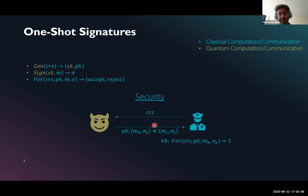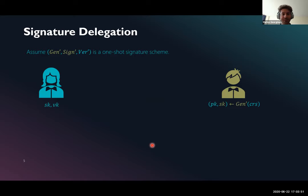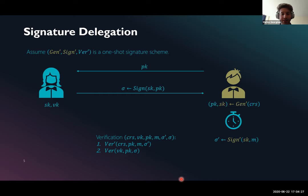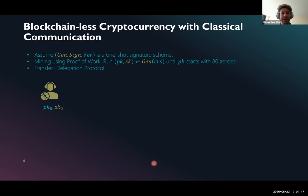The security property says that no algorithm can output a public key of its choice together with M0, sigma0 and M1, sigma1 such that both signatures are valid for the corresponding messages. Notice that the adversary is allowed to pick the public key and the whole communication between the adversary and the challenger is classical. If we have this, here's a way we could delegate the power to sign a single message to Bob: we ask Bob to send us a public key by running the one-shot signature generation algorithm, then Alice responds with a signature on this public key using her secret key. Later, Bob can use his quantum secret key to sign a single message, and to verify, we run the verification algorithm of the one-shot signature and then the verification algorithm of the original signature scheme.